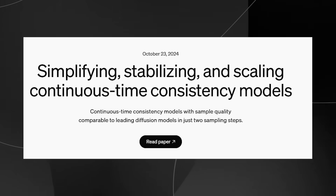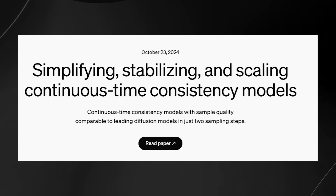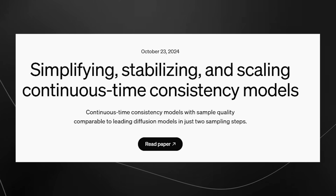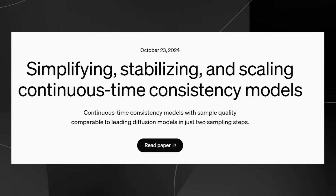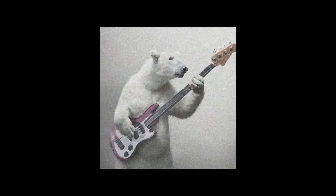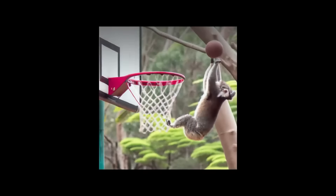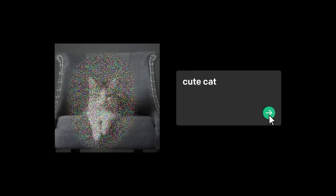This is a key achievement: scaling continuous time consistency models can generate high-quality images in just two steps, compared to the dozens or even hundreds of steps required by previous methods, thus speeding up the entire process. Traditional AI image generators rely on diffusion models — imagine starting with a chaotic, noisy image and slowly cleaning it up over many stages until it becomes a recognizable picture. This process takes anywhere from 100 to 500 steps, making it computationally expensive and too slow for real-time applications.